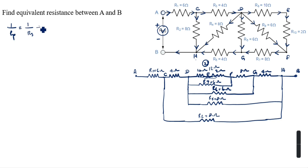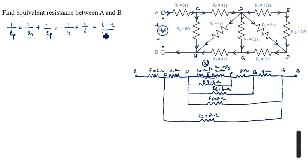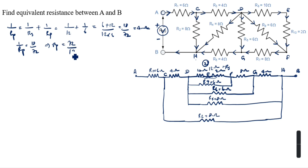This and this is parallel, so what you will do: 1 by RP equals 1 by RS plus 1 by R9. RS is 12 ohm, so 1 by 12 plus 1 by 6. Cross multiply: 6 plus 12 divided by 12 into 6 gives 18 by 72. So RP equals 72 by 18 equals 4 ohm.